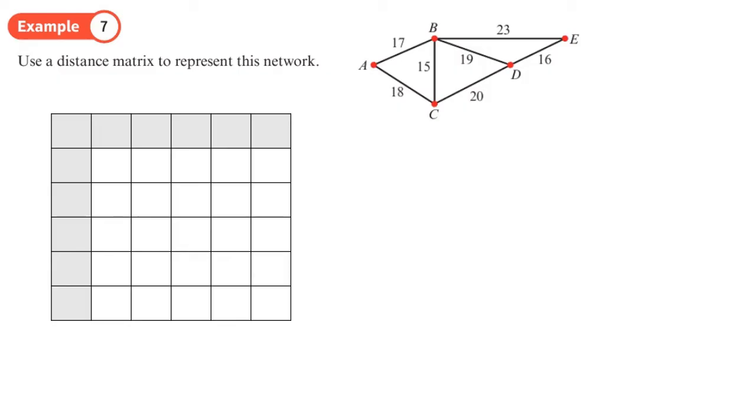Okay, so this question now is a distance matrix. So we put the vertices along the top: A, B, C, D, E, the same along the side. And now we look at the distance between different vertices. So we'll start with A. So A to B is 17. There's nothing between any of the vertices and themselves, there's no distance, so they can all be dashes there. From A to B is 17, and A to C is 18.